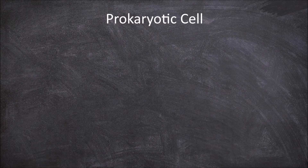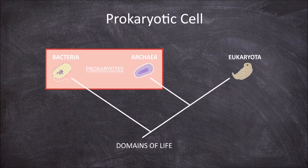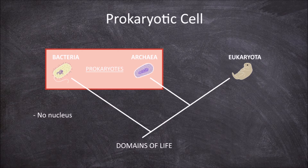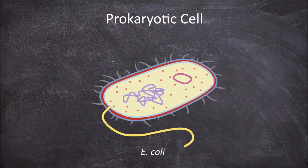In this video we're going to look at the structure and function of a prokaryotic cell. Prokaryotes include members of the two domains, archaea and bacteria. Prokaryotes are organisms that do not possess a nucleus. They have a simple cell structure that lacks compartmentalization into organelles. E. coli is an example of a prokaryote and a prokaryotic cell.